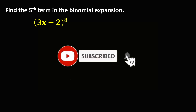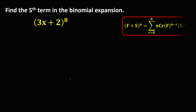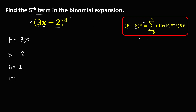Let's solve this problem. To find the fifth term in the binomial expansion, we use the binomial expansion formula. From the given, the first term equals 3x, the second term is positive 2, and n, the exponent, is 8. Since we're looking for the fifth term and r starts from 0, r equals 5 minus 1, so r equals 4.